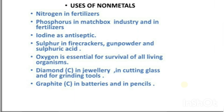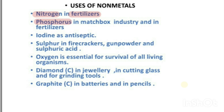Now let's talk about the uses of non-metals. Nitrogen is used in making fertilizers, as plants require nitrogen and phosphorus as their two main nutrients for growth. Phosphorus is used in the matchbox industry — the black tip of a matchstick is made with phosphorus — and it is also used in fertilizers. Iodine is a very good antiseptic and is used in making antiseptic lotions and creams.